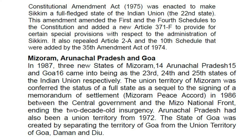Mizoram, Arunachal Pradesh and Goa: In 1987, three new states of Mizoram (23rd), Arunachal Pradesh (24th), and Goa (25th) came into being as states of the Indian Union. The Union Territory of Mizoram was conferred the status of a full state as a sequel to the signing of a Memorandum of Settlement — the Mizoram Peace Accord — in 1986 between the Central Government and the Mizoram National Front, ending the two-decade-old insurgency. Arunachal Pradesh had also been a Union Territory from 1972. The state of Goa was created by separating the territory of Goa from the Union Territory of Goa, Daman and Diu.